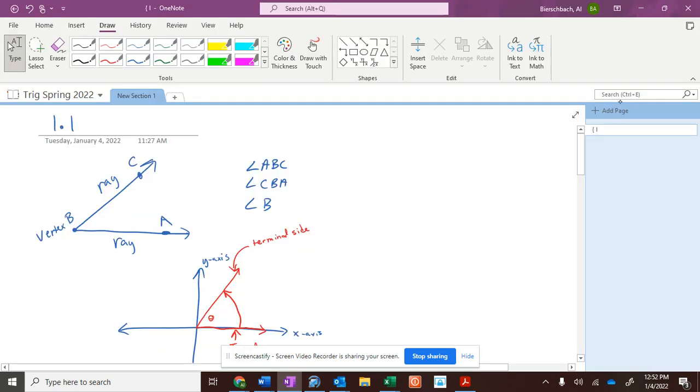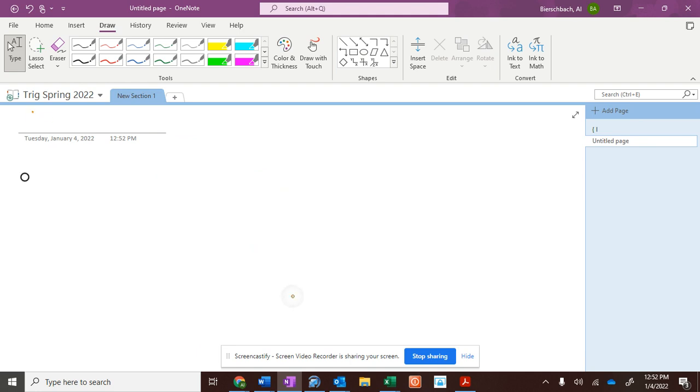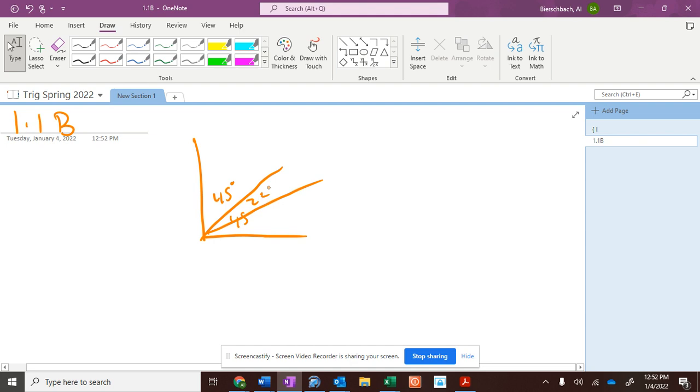So, the second section we'll call 1.1b. We're working with degrees, minutes, and seconds on this. An angle. Here's a 90 degree angle, right? We split it in half and there, two 45 degree angles. We can split that one in half and then we get a 22.5 and a 22.5. And we can split that one in half and keep going and going and going.